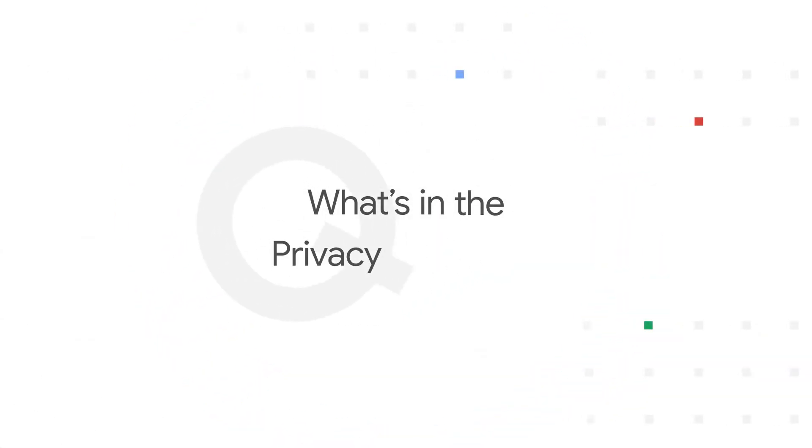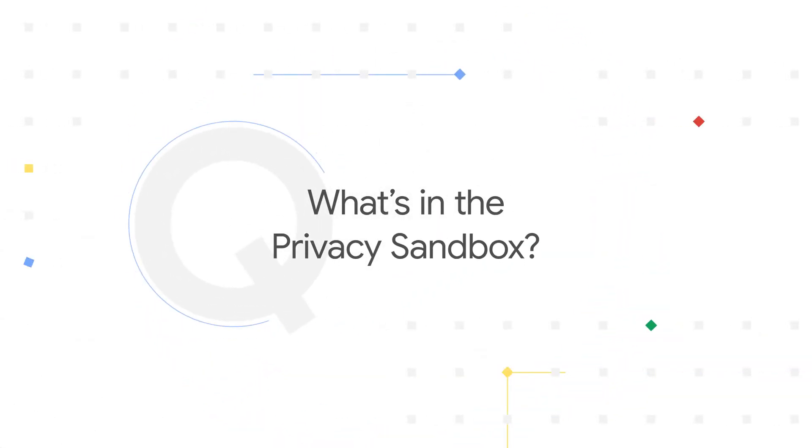Question three: what's in the privacy sandbox? Within the sandbox are privacy-preserving proposals for use cases such as interest-based ads, measurement, and form protection that are designed to work for businesses. Say, for example, you want to show people ads based on their interests.